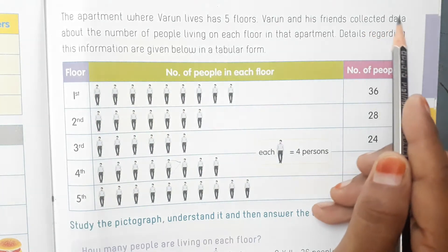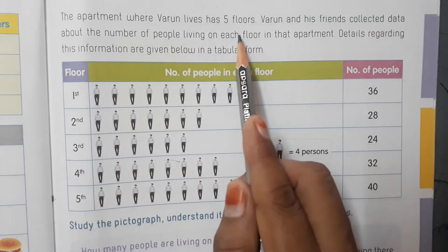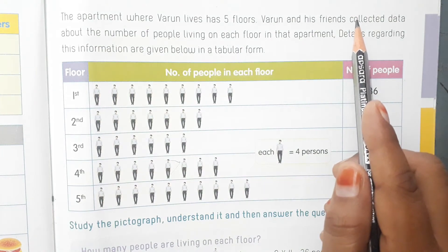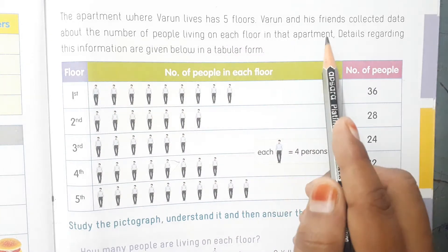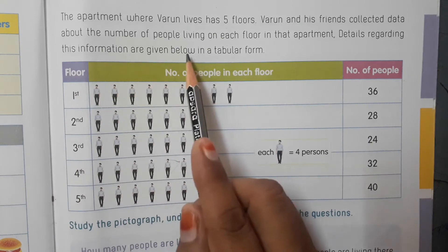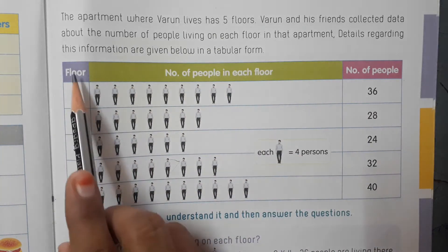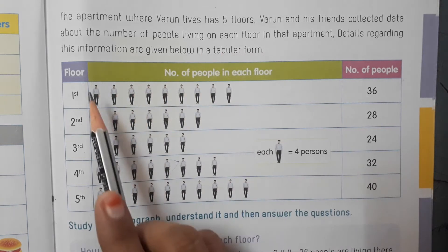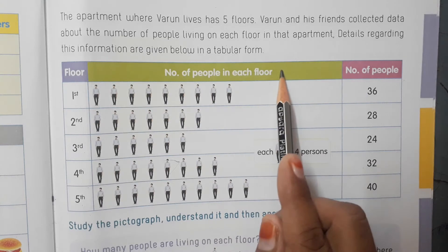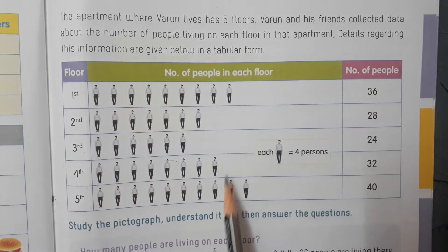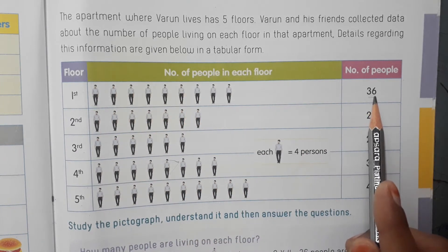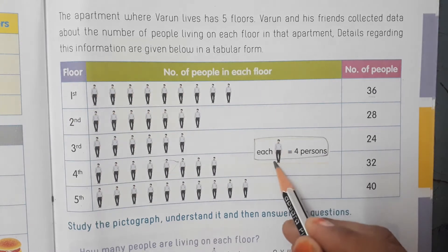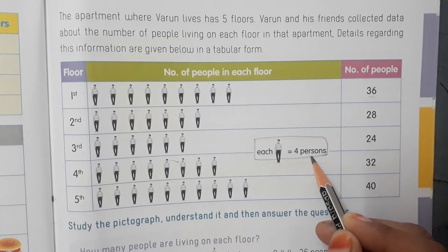Varun and his friends collected data about the number of people living on each floor in that apartment. Details are given in a tabular form. The floors are: first, second, third, fourth, and fifth. The table also shows picture representation and numbers. Here is a key — each picture represents four persons.